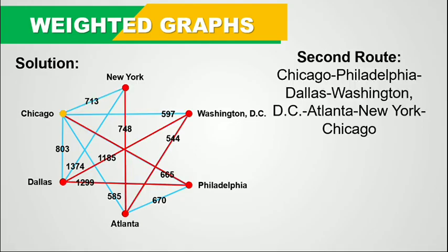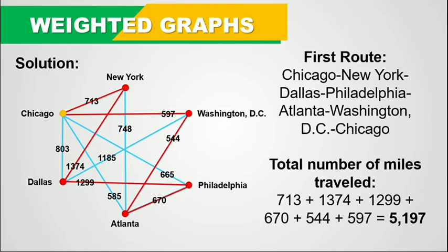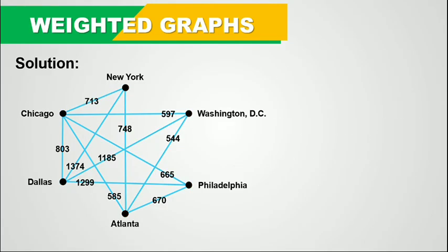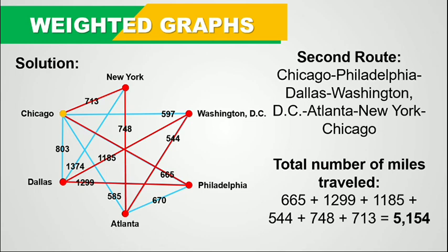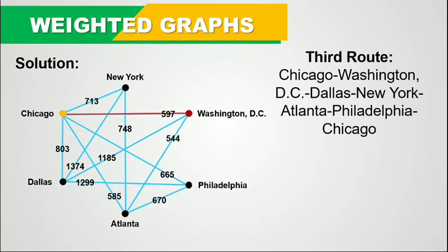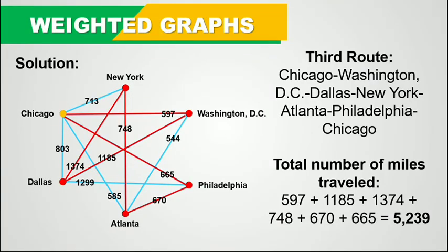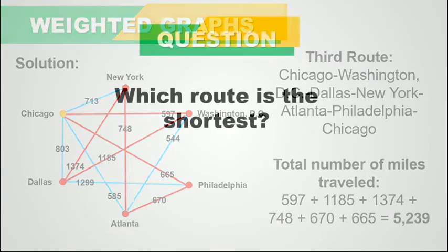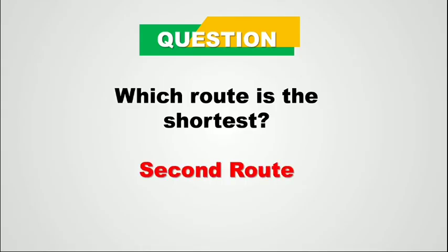Which road is the shortest? Road 1 is 5197 miles, Road 2 is 5154 miles, and Road 3 is 5239 miles. Therefore, Road 2 is the shortest. By sketching a weighted graph we can find a more efficient road, especially when planning to travel to different destinations. That's how weighted graphs work — I hope you understood how to sketch them to represent a traveling salesman problem.